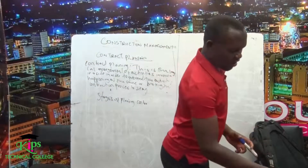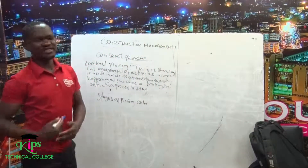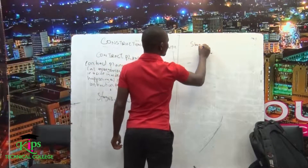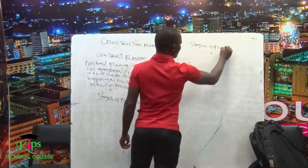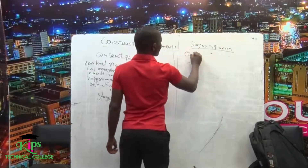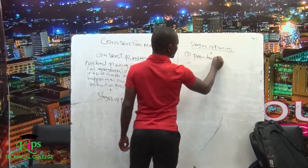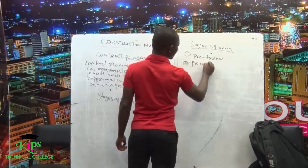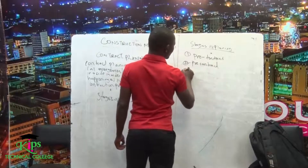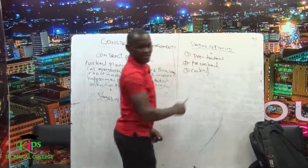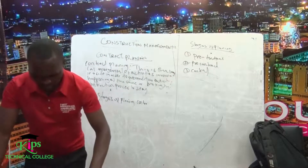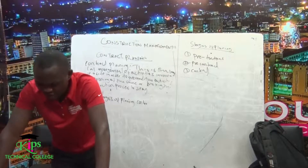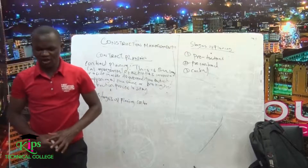When we talk about planning before the tender, it means this is the time that we have not done anything. Pre-tendering planning is the planning that is done between the notification of inviting tenders and the submission of the bids. It means you have to plan between when we invite tenders and the time the tenders submit their tender forms.